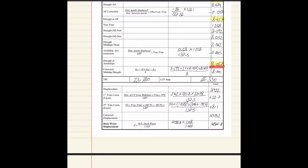The corrected midship draft is obtained as 8.057 meters. We then apply the formula for the true mean draft: (draft forward perpendicular + 6 × draft midship + draft aft) divided by 8. This accounts for any hogging or sagging of the vessel. Solving this gives a numerical answer of 8.000 meters.